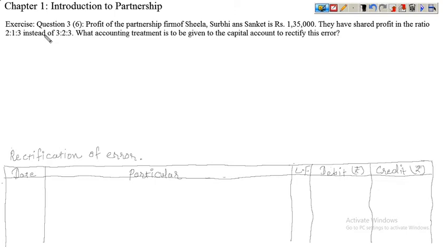Good morning students, welcome to Discover Tuition Classes. I am Samir. We are doing Chapter Number 1, Introduction to Partnership. Question number 3, question 6: the profit of the partnership firm of Sheila, Surbhi, and Sanket is Rs 1,35,000. They have shared profit in the ratio 2:1:3.